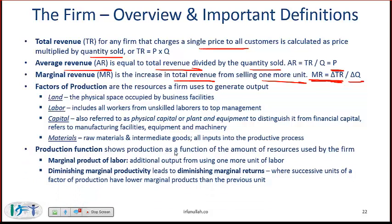The production function shows production as a function of the amount of resources used by the firm. The marginal product of labor is the additional output from using one more unit of labor — note that this is a quantity, not a dollar amount. Diminishing marginal productivity leads to diminishing marginal returns. If you add one more laborer and get 10 more units of output, your marginal product of labor is 10, but as you keep adding more units of labor, the output from the next unit comes down to 9, then 8 — this is diminishing marginal productivity.